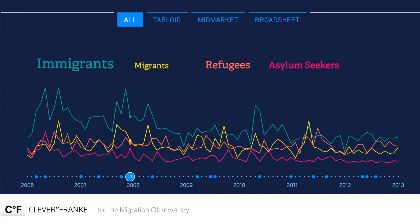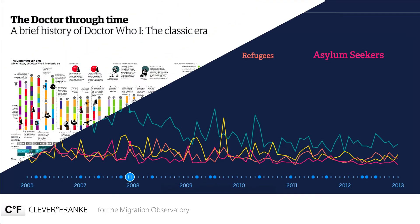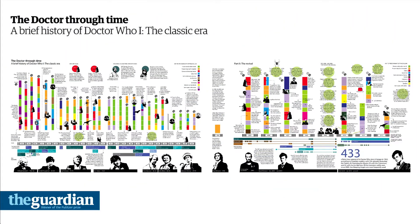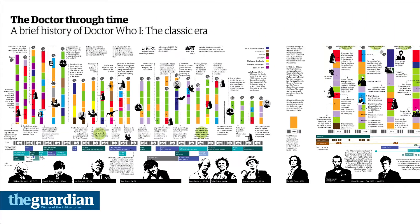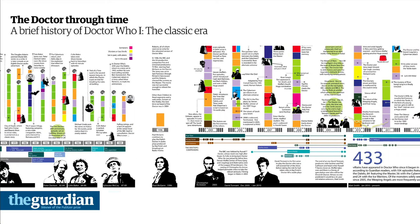Some data visualisations also aim to make it possible to explore the data on which they are based. A data visualisation may have been generated automatically from a big dataset, such as with migration in the news. Or, it may be based on a small dataset, as in the trials of a Time Lord.